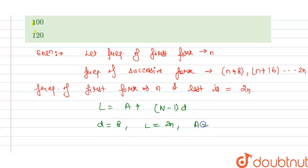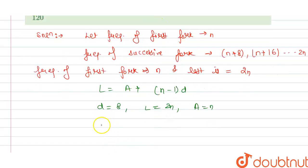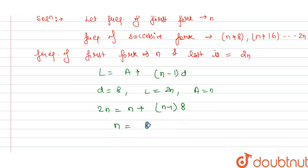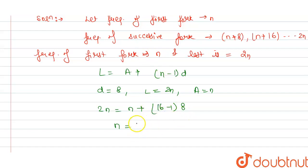Substituting: 2n = n + (16−1)×8, which gives n = 15×8 = 120. So the frequency of the first tuning fork is 120 Hz. There are 16 tuning forks, so we put 16 into the formula: 16−1 = 15, multiplied by 8 gives 120. This is the answer.